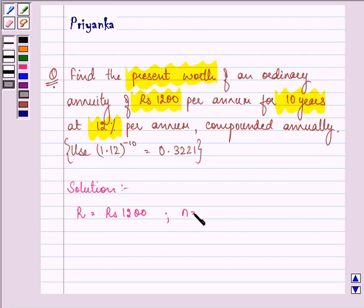We are given time, that is N, as 10 years and we are given rate of interest, that is i, as 12% per annum, which can also be written as 0.12 per annum.